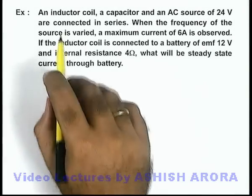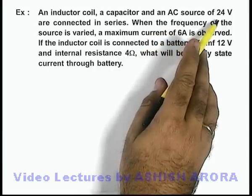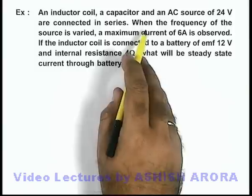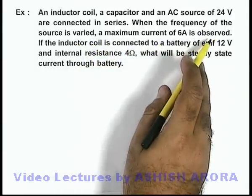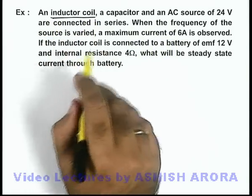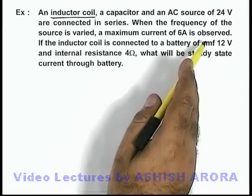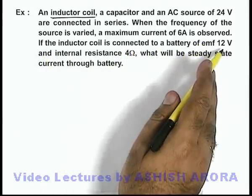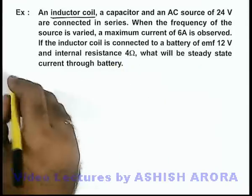In this example, we are given that an inductor coil, a capacitor, and an AC source of 20 volt EMF are connected in series. When the frequency of the source is varied, a maximum current of 6 ampere is observed. That means the inductor coil must be having some resistance. The problem also states that the inductor coil is further connected to a battery of EMF 12 volt and internal resistance 4 ohm, and we are required to find the steady current through the battery.